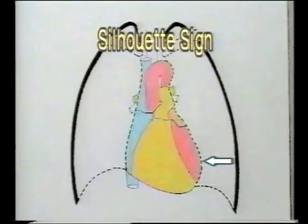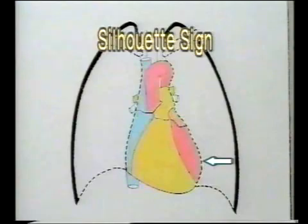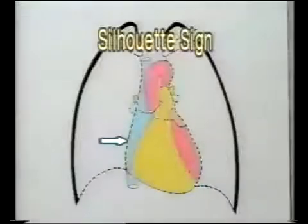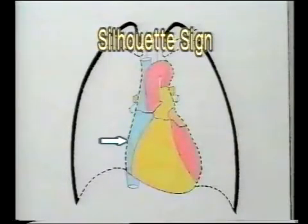The left heart border is anterior, so if a consolidation obliterates it, it is in the lingular lobe; if not, then it is in the lower lobe. The right heart border is also anterior, so if a consolidation obliterates it, it is in the right middle lobe; if not, then it is in the right lower lobe.